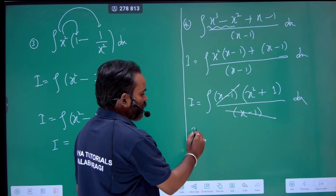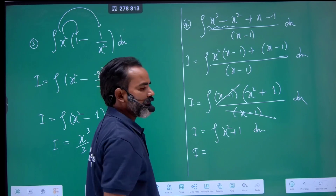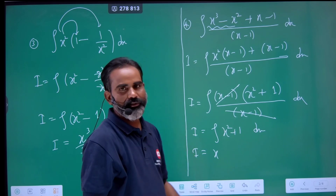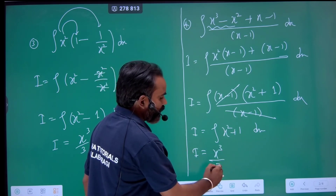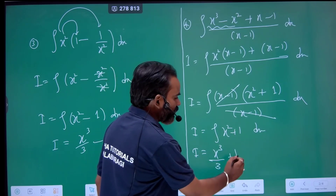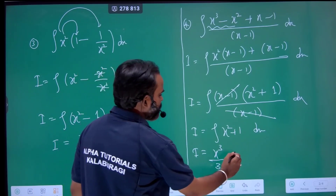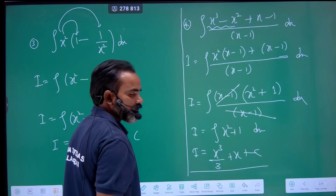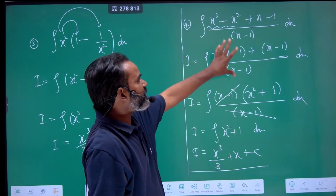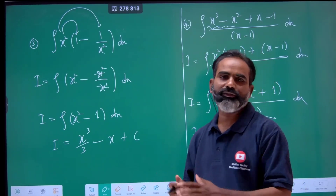Now the integration directly: what is the integration of x squared? Add 1: 2 plus 1 will be 3, and 3 is the denominator — so x cubed over 3. What is the integration of 1? It is x plus c. So the answer is x cubed over 3 plus x plus c. If you think about how to make it simple, integration will be more easy.